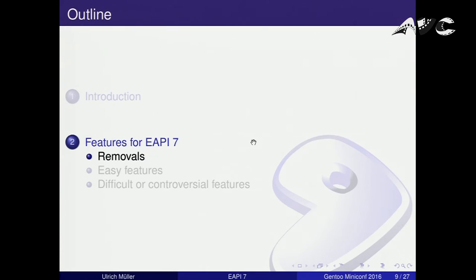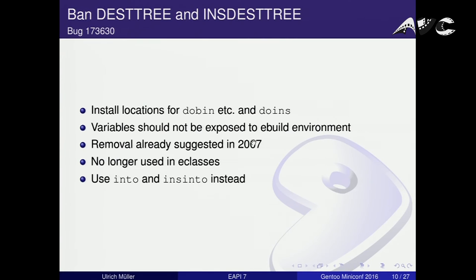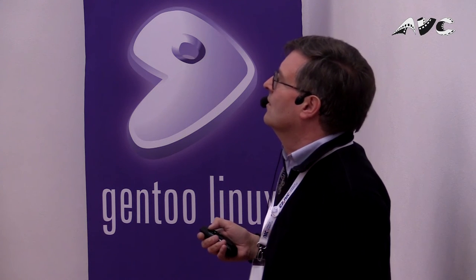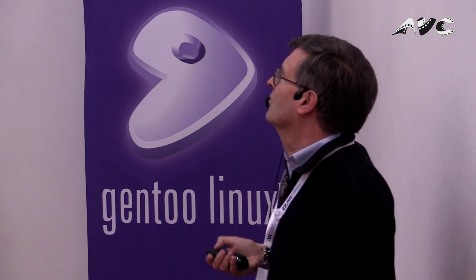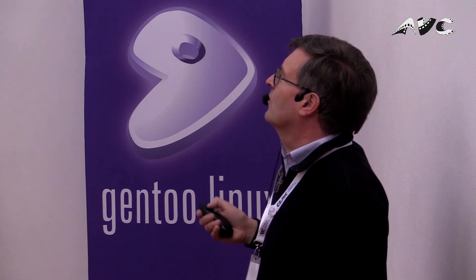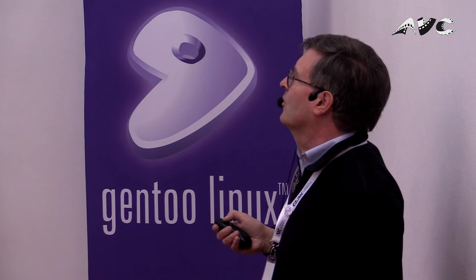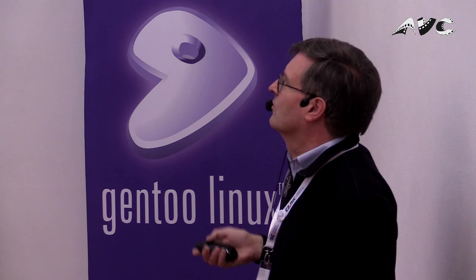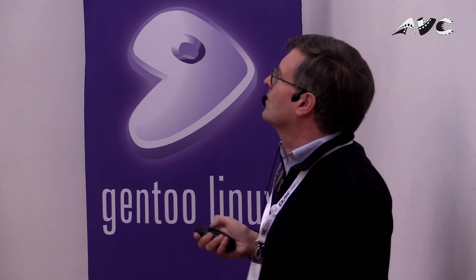Let's come to the easy things for eAPI 7. We have two variables called INSDESTREE and TESTROOT, which are the locations set by the into and ins-into functions — the install locations for dobin, doins, and so on. There's no reason for these variables to be exposed to the eBuild environment. The removal was already suggested in 2007, they're no longer used in eClasses, so it's a good time to finally get rid of them.